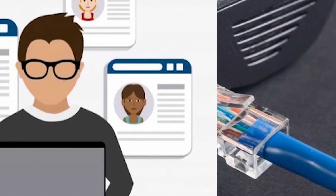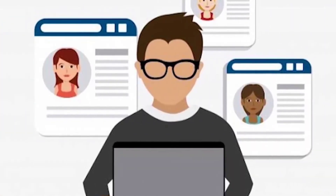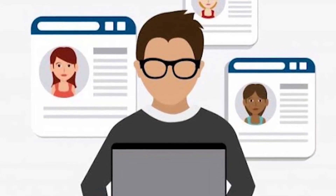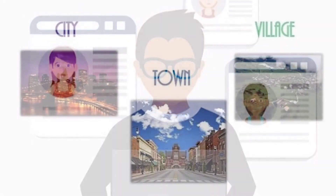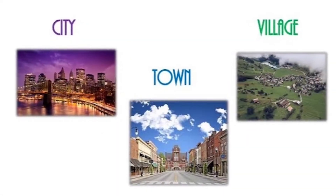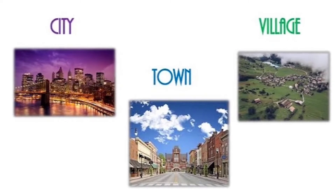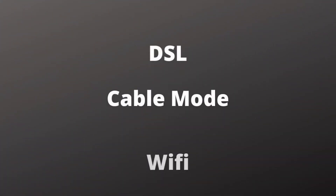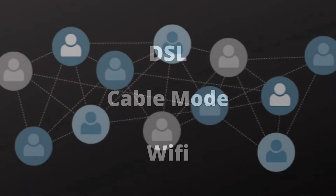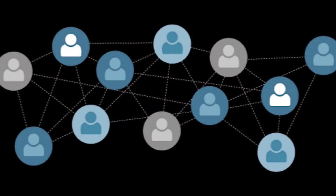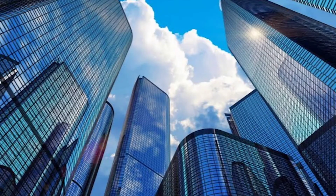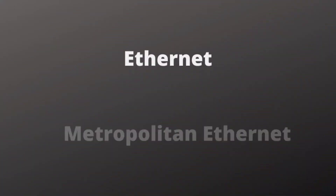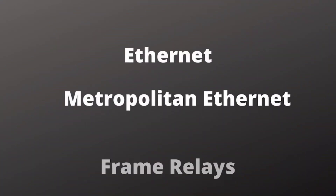They provide these services according to the demand of the users. For example, to normal users in a small town or a city, ISPs provide internet services through DSL connection, cable modem connection, and wifi. But for businesses and large organizations, this is done through Ethernet, Metropolitan Ethernet, and Frame Relay services.